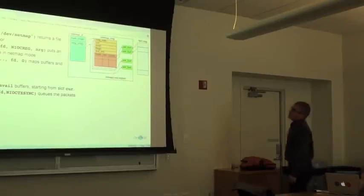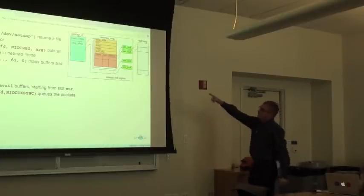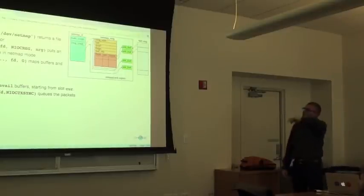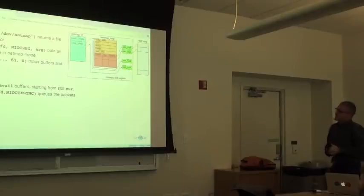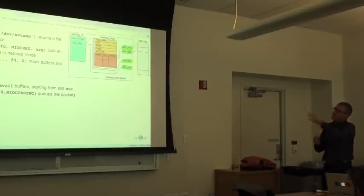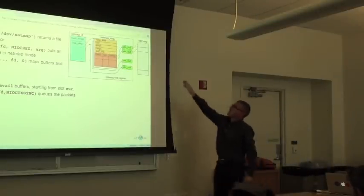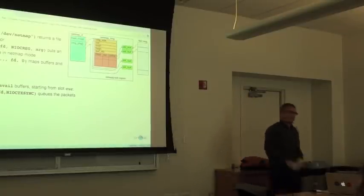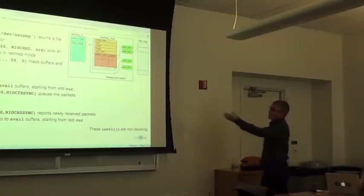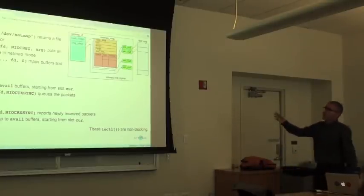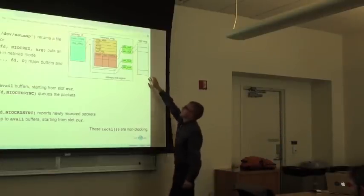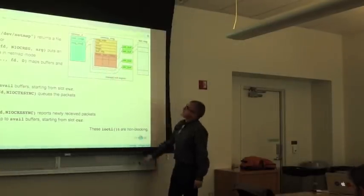For transmission: fill the buffers with data, fill the length information in the ring. The cur and avail fields tell the system how many buffers you're going to transmit. Then issue an ioctl to tell the OS to take these packets, queue them on the device, and start the DMA. This is a non-blocking system call. On receive, there's a dual ioctl that reports newly received packets. The important part — the packet lengths — is copied from the NIC ring to the netmap ring, and cur/avail are updated to reflect how many packets you have.